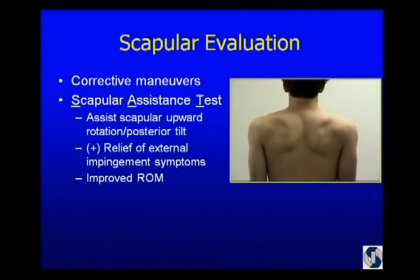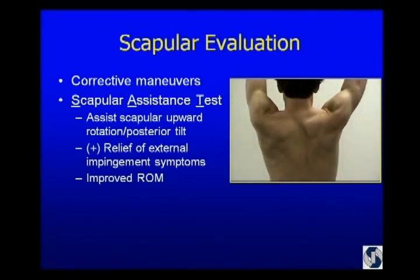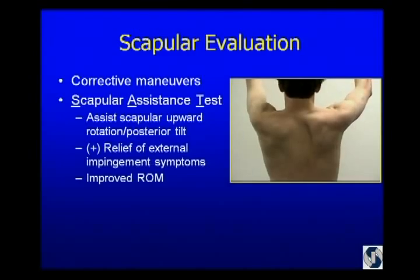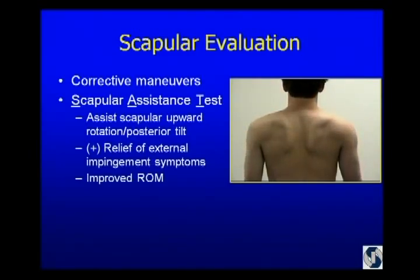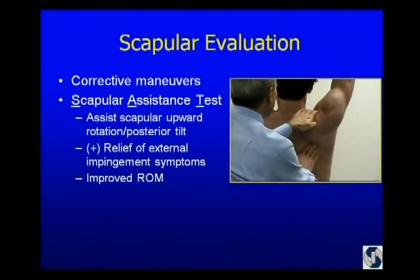The corrective maneuvers evaluate the scapula — you identify the pathology and the abnormal kinematics, and if you can correct them by doing scapular maneuvers, then you know that's where the pathology lies. The scapular assistance test, popularized by Ben Kibler, involves assisting the scapula in upward rotation and posterior tilt. This young man has limitation of elevation and forward flexion on the right side, and pain stopping him from going higher. Watch his scapular winging — this is a type 2 scapular dyskinesis of the entire medial border. If I help him, I eliminate the impingement signs and he gets improved range of motion. He doesn't have impingement that can't be corrected with the scapular program.